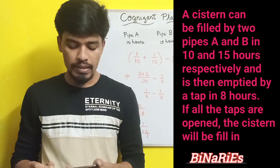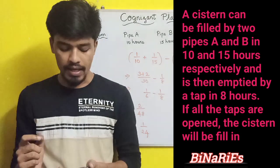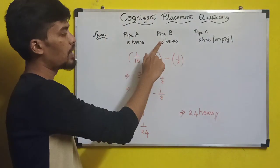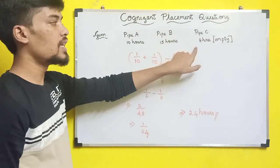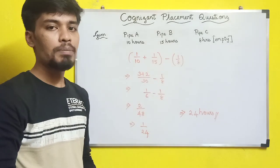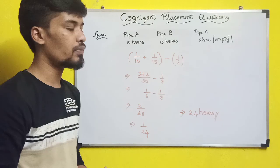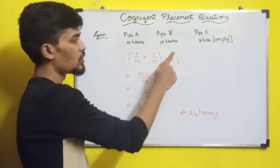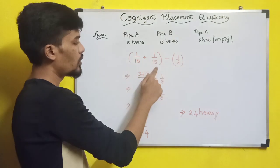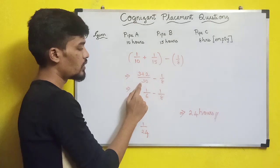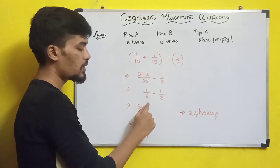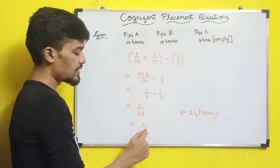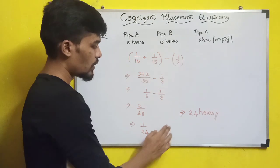Next question: a tank can be filled by pipes A and B in 10 hours and 15 hours respectively, and emptied by pipe C in 8 hours. If all pipes are open, how long to fill the tank? Combined rate = 1/10 + 1/15 − 1/8. Taking LCM of 10 and 15 gives 1/6, so 1/6 − 1/8. Cross-multiplying: (8−6)/48 = 2/48 = 1/24. So the tank fills in 24 hours.